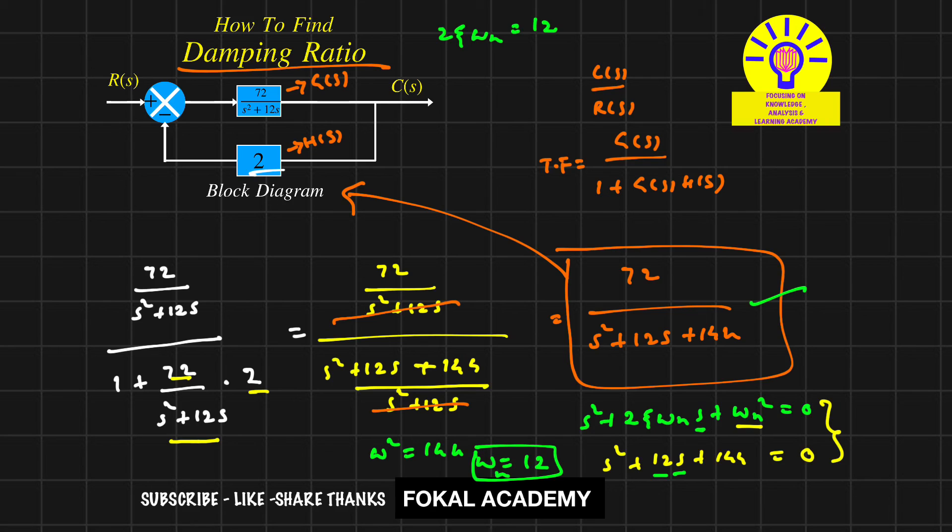Since ωₙ = 12, we have 2ζ × 12 = 12. Therefore, ζ = 1/2, which equals 0.5. This is the damping ratio for the given block diagram.